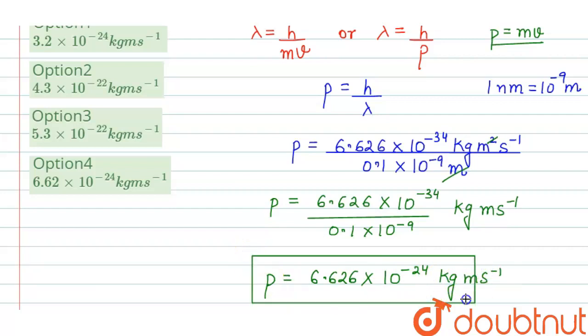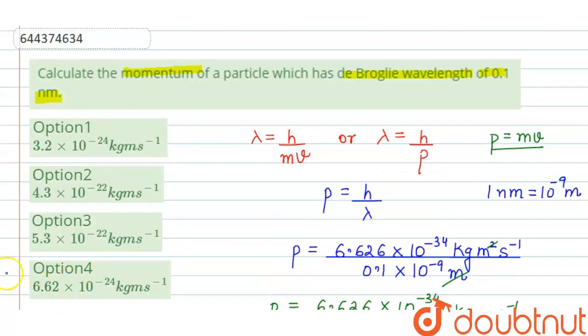This is the momentum of the particle. So our correct option will be option 4.